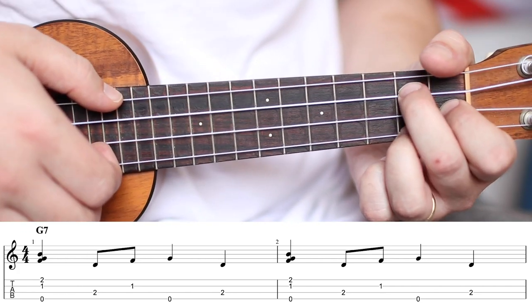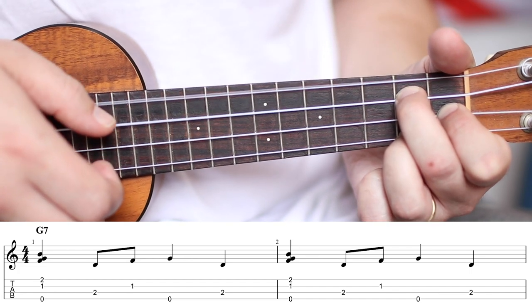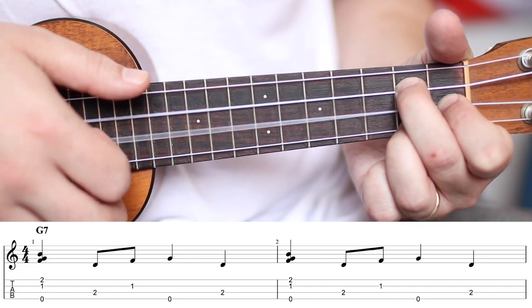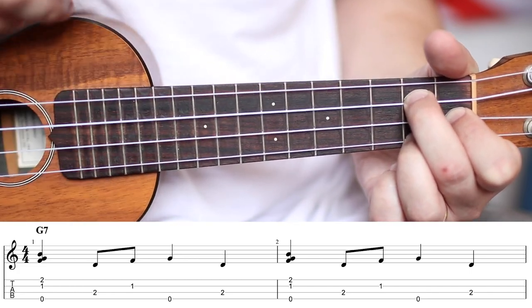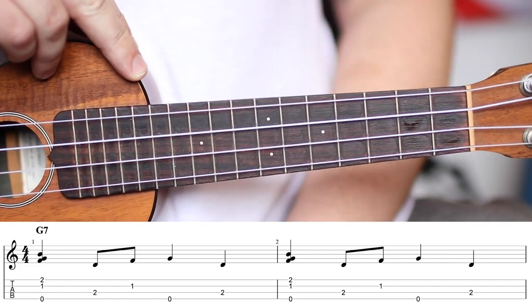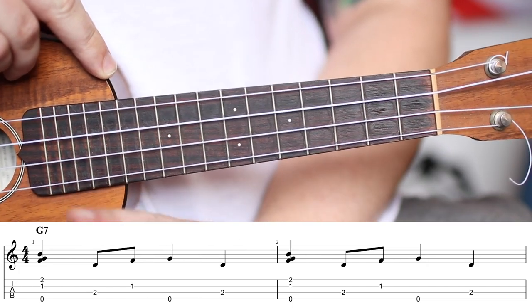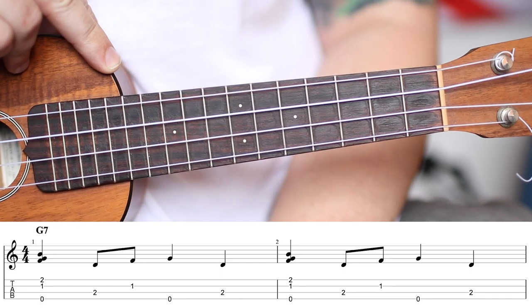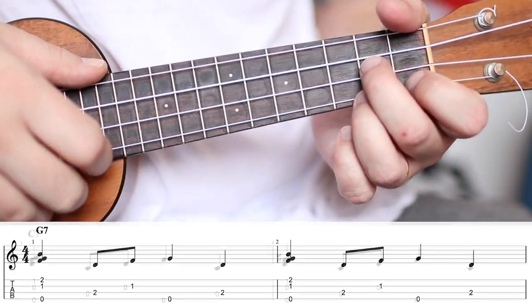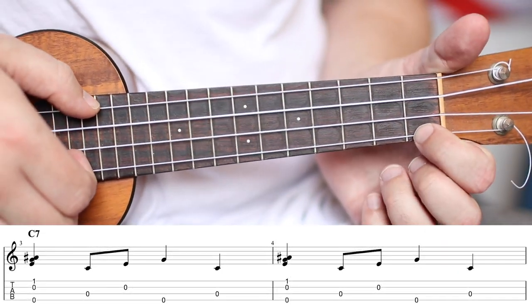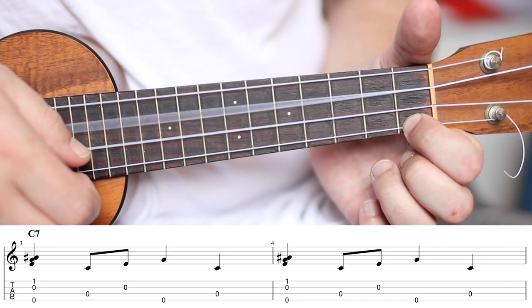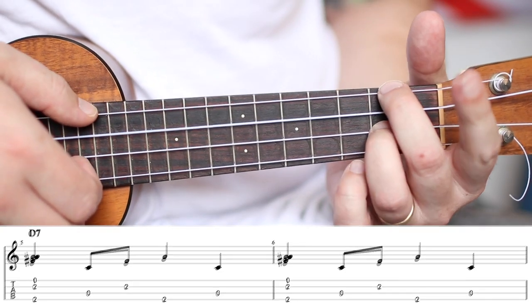It's just one extra note but it sounds completely different. If you listen to the old one compared to the new one, completely different. One extra note. And that is the fingerpicking pattern that we're going to use for the whole 12 bar that you could use for your entry. So over the C it's going to sound like this. And then over the D7 it's going to sound like this.